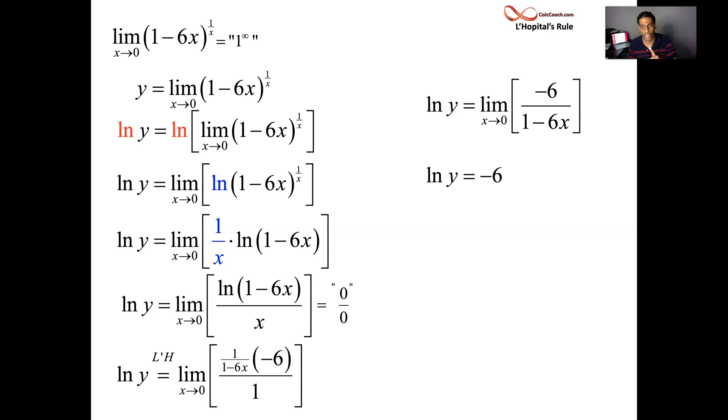Not the answer to your question. You're looking for Y, and what you have is the natural log of Y. Continue to write ln Y, so you can remind yourself of that. So, E to the left and E to the right. This function, as X is headed to zero, is headed to E to the negative six. All right. Okay, great.